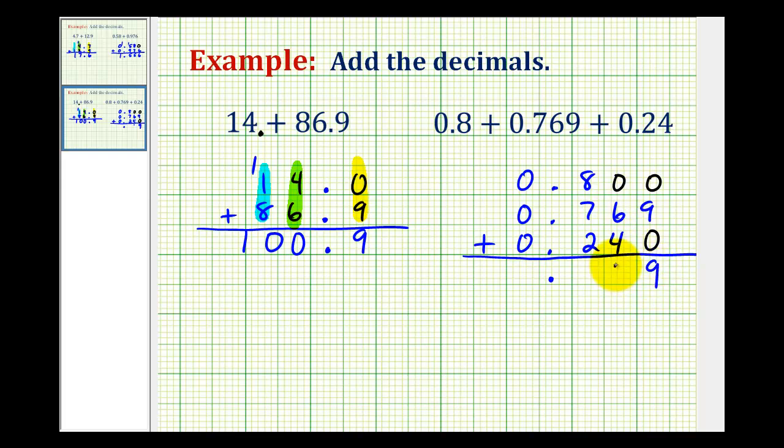So we have nine, here we have ten, carry a one. Nine plus seven is sixteen, plus two, that would be eighteen, carry a one. Our sum is 1.809 or one and eight hundred nine thousandths.